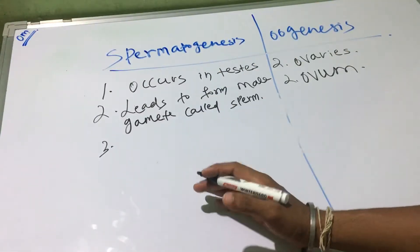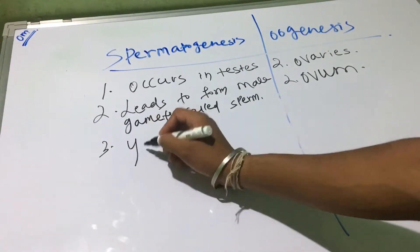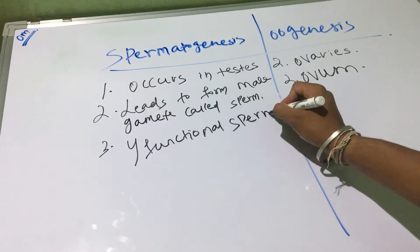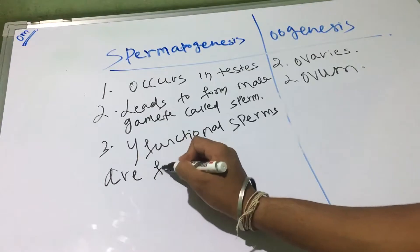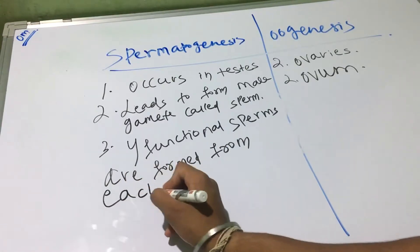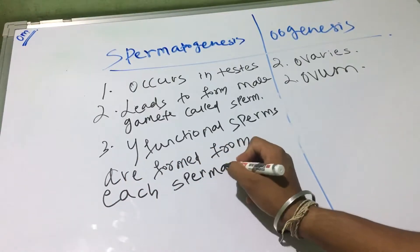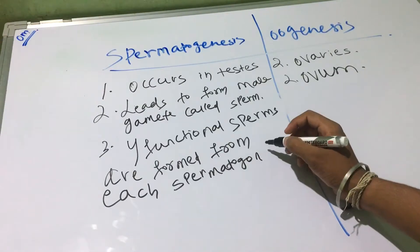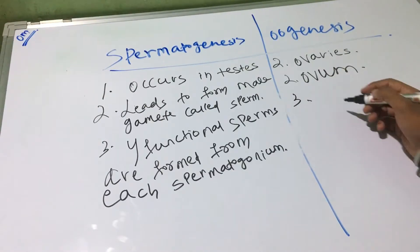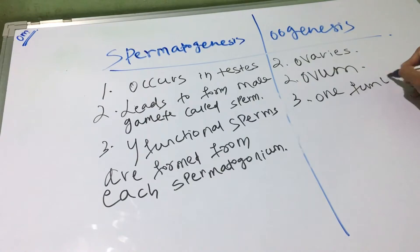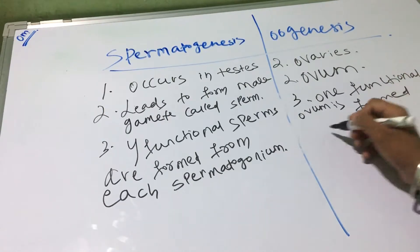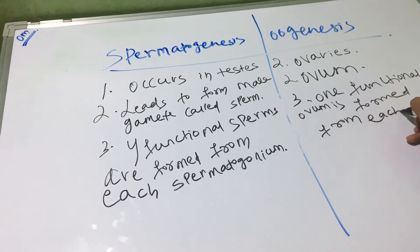The third point: finally four functional sperms are formed from each spermatogonium. And in case of oogenesis, finally one functional ovum is formed from each oogonium.